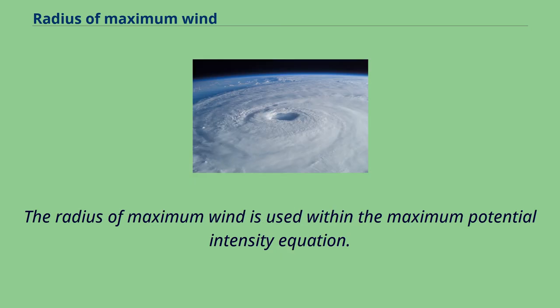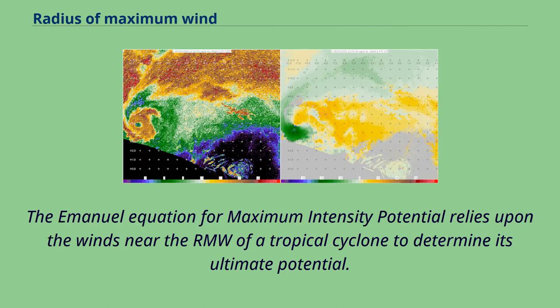The radius of maximum wind is used within the maximum potential intensity equation. The Emanuel equation for maximum intensity potential relies upon the winds near the RMW of a tropical cyclone to determine its ultimate potential.